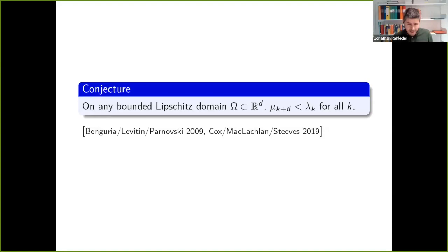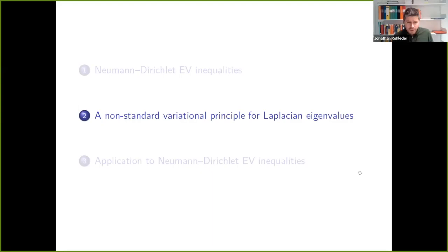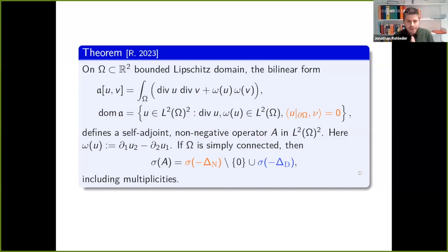What can one do in the non-convex case? Before addressing that, I want to show you a non-standard variational principle for the eigenvalues of the Dirichlet and Neumann-Laplacian — slightly different from the usual one. This is something you might have seen in my talk two years ago on the hotspots conjecture, though in a different form.